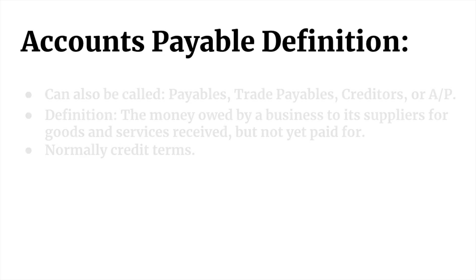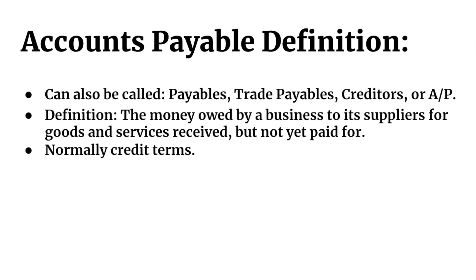Now what is Accounts Payable? It's very similar. Accounts Payable can also be called Payables, Trade Payables, Creditors is quite common, or abbreviated as A/P. The definition of Accounts Payable is the money owed by a business to its suppliers for goods and services they have received but not yet paid. Accounts Payable is the money you owe to your suppliers, but you haven't paid them yet — you bought it on credit. Their credit terms outline that you have to pay them back by a certain time, say 30 days after purchase.